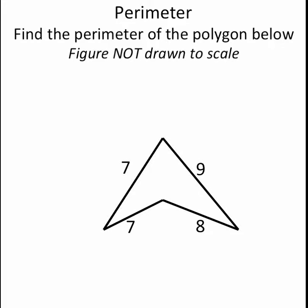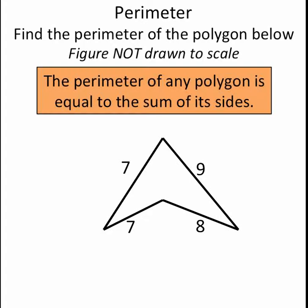This problem is asking me to find the perimeter of the polygon below. Remember that the perimeter of any polygon is equal to the sum of its sides. So to find the perimeter of this polygon, I simply have to add up all of its sides.